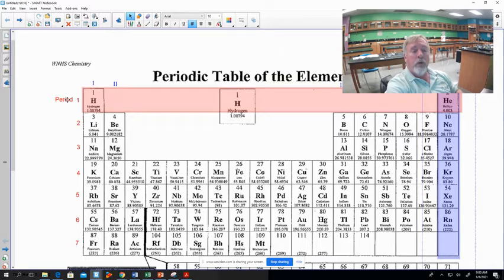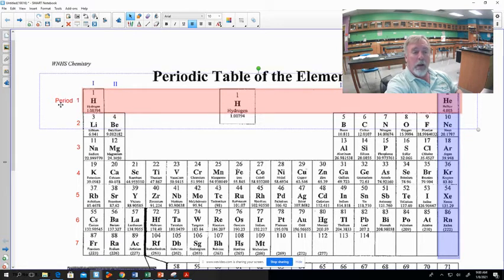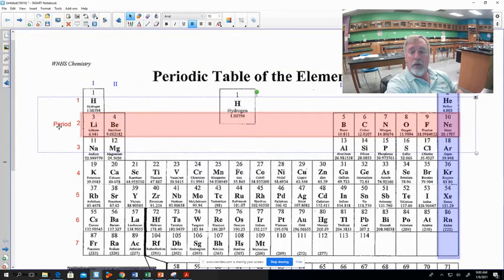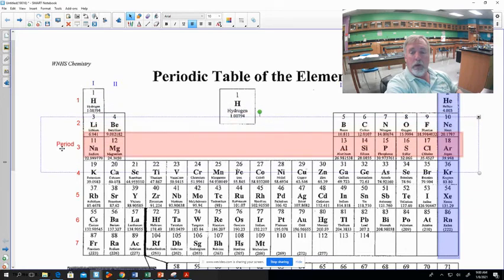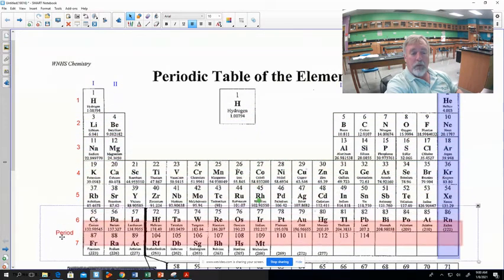Periods on the other hand, are rows. So here's the first row of the periodic table. We denote rows with our regular numbers, our Arabic numbers. Period one, period two, period three, four, five, six, seven.